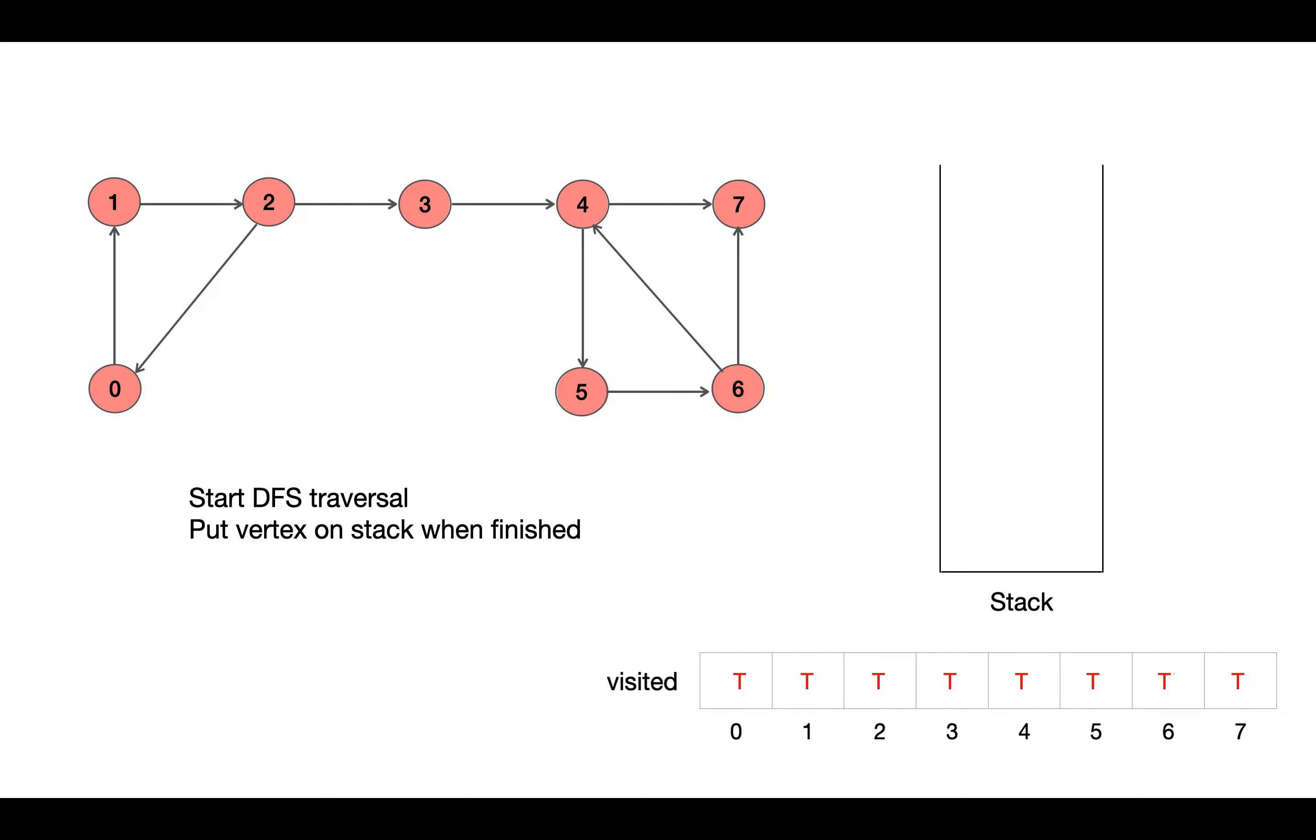Now we see 7 has no outgoing edges, that is it has no child nodes left to visit, so we push vertex 7 into the stack. Coming back, 6 we are done visiting its child nodes 4 and 7, so we put 6 into the stack, then 5, and then 4 and 3, 2, 1, and 0.